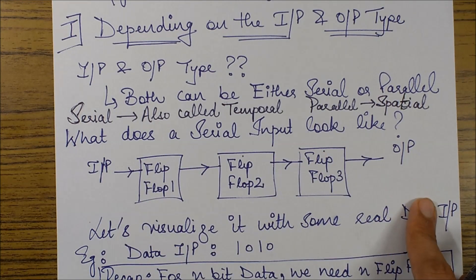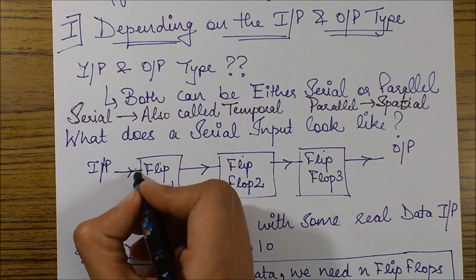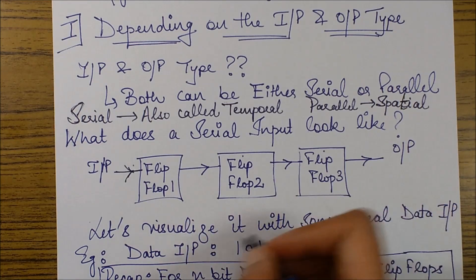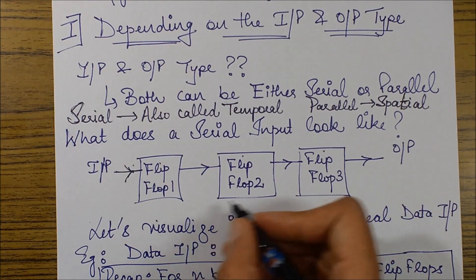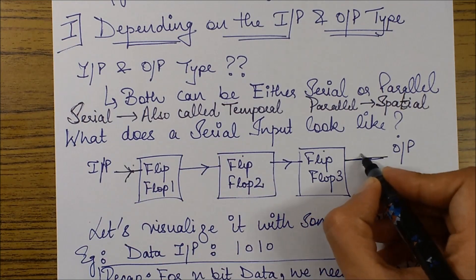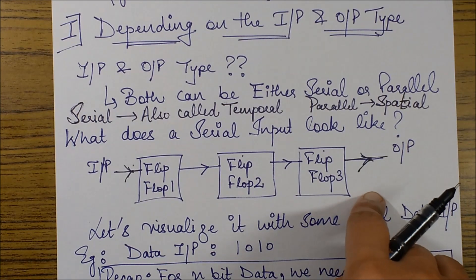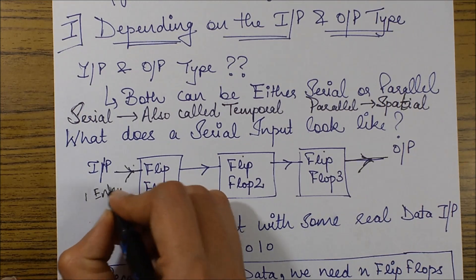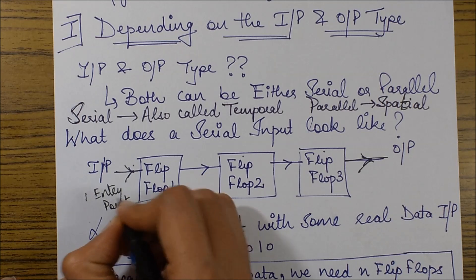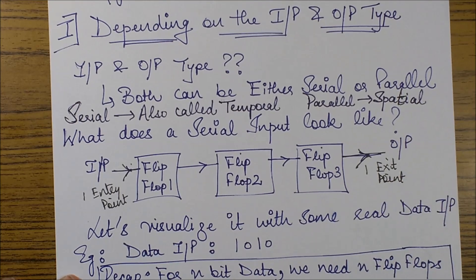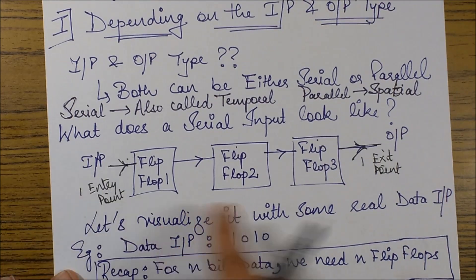For serial input, data is entered from one entry point, and the flip-flops communicate with each other to get the following data input bits. The output is also fetched from one exit point. So there will be only one entry input point and one exit output point.